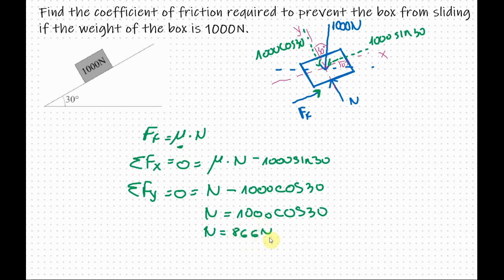Now I can use this value and I will plug it in this first equation here. So μ times 866 minus 1000 sine 30 equals 0.